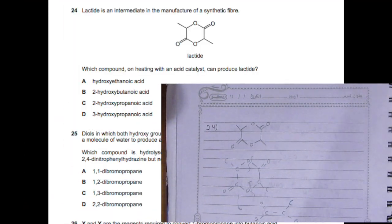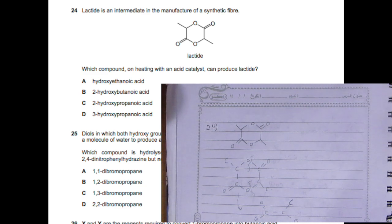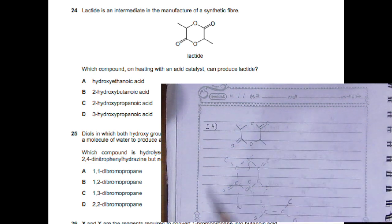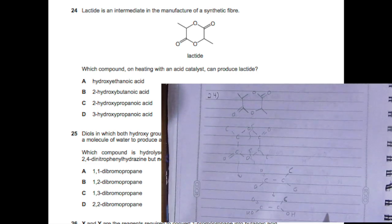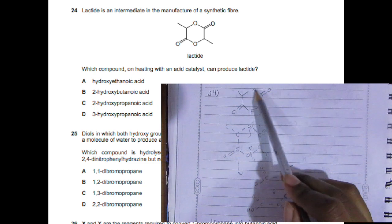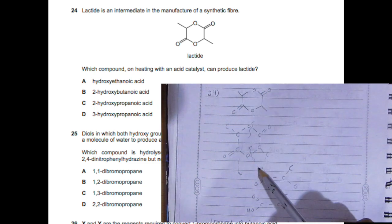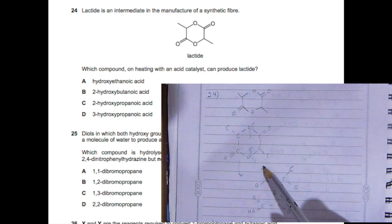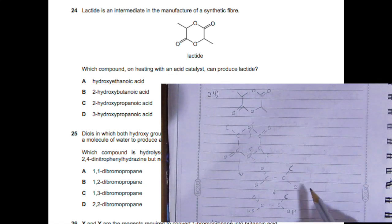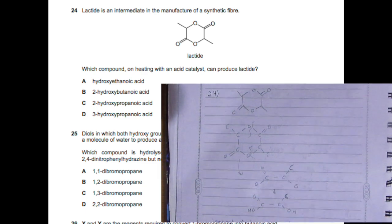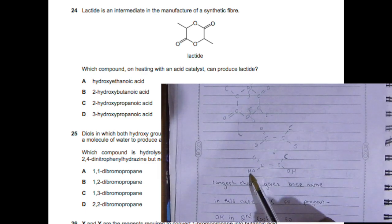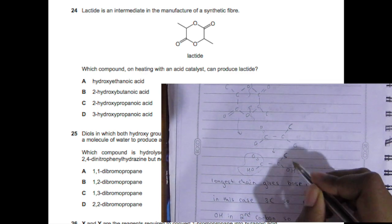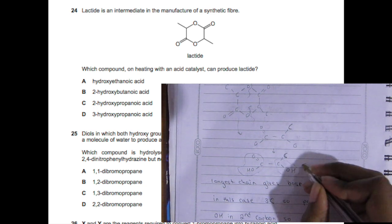Now here, the lactide - which compound heating with an acid catalyst could produce the lactide? So here I drew it out, and if you cut these out, you can tell that this is an ester because it has a carboxylic here and the alcohol part here. So you draw it out, then you come here. You have this with O and a carbon here and an O here. So it's the same as adding the hydrogen here - you got a carboxylic and the alcohol part.